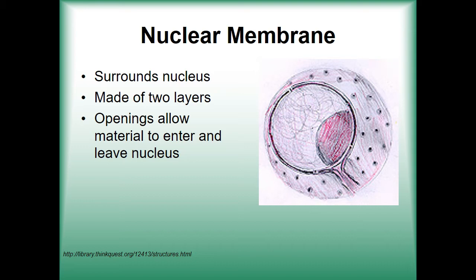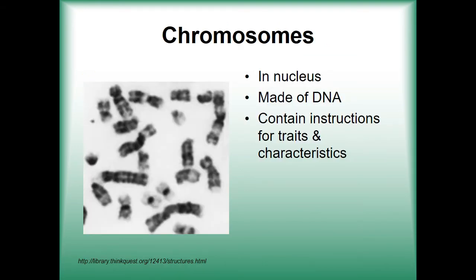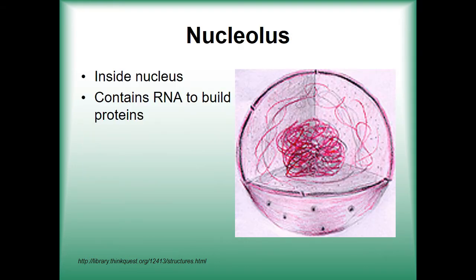The genetic materials we spoke of are what we call DNA. These DNA combine together to form the chromosomes within the nucleus, which are responsible for the transfer of traits from a parent to an offspring. Alongside these chromosomes is the nucleolus, responsible for the production of protein required for the translation of genetic material.